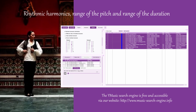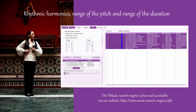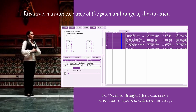We can now try to obtain more information about these titles. For instance, in Pitch Distribution, let us open range of the pitch, and in Duration Distribution, let us open range of the duration. Let us click on Search.